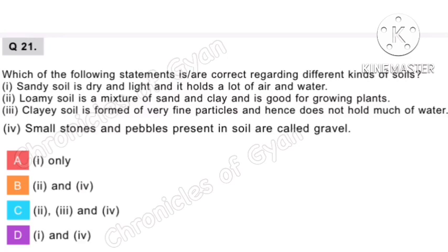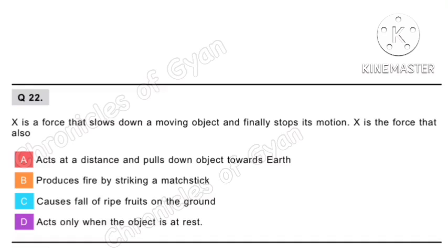Question 22. X is a force that slows down a moving object and finally stops its motion. X is also the force that produces fire by striking a matchstick. Here X is friction — a force that slows down or stops a moving body as it opposes motion, and also produces fire by striking a matchstick. Option B is the correct answer.